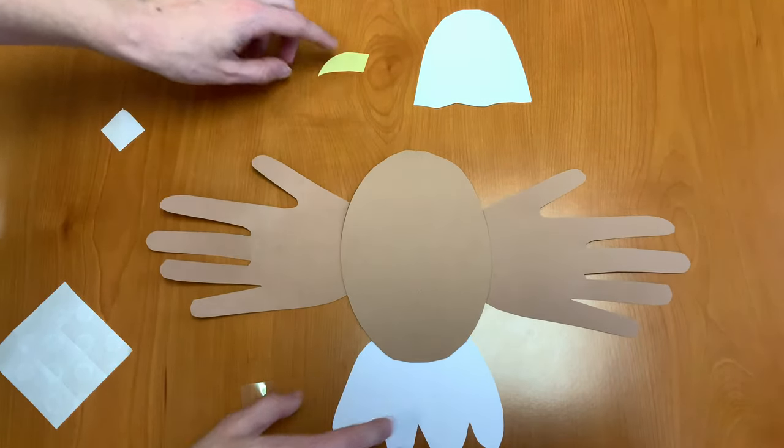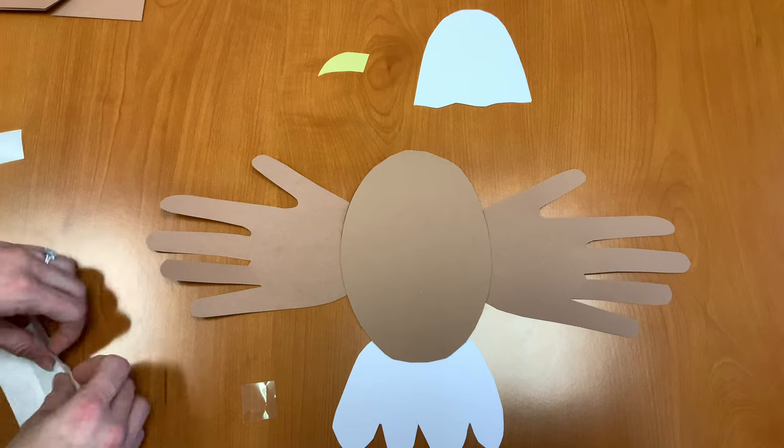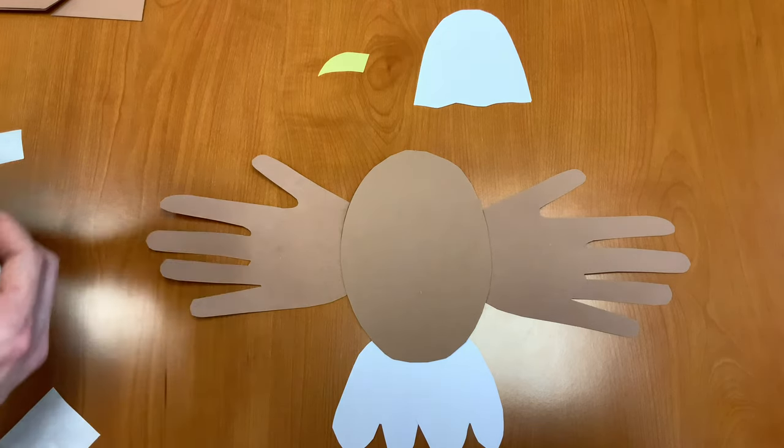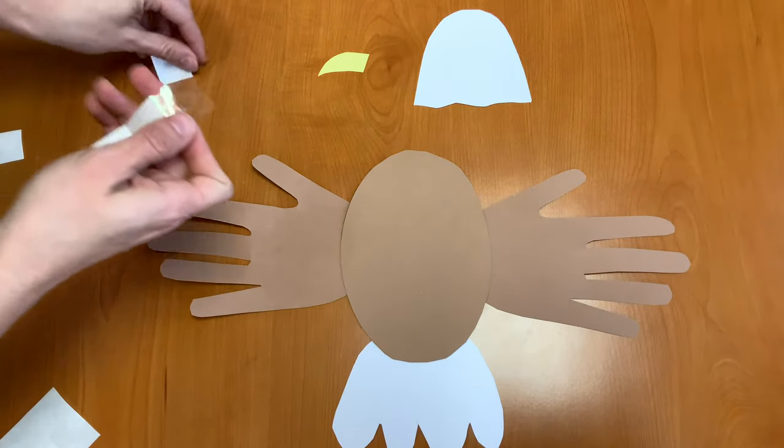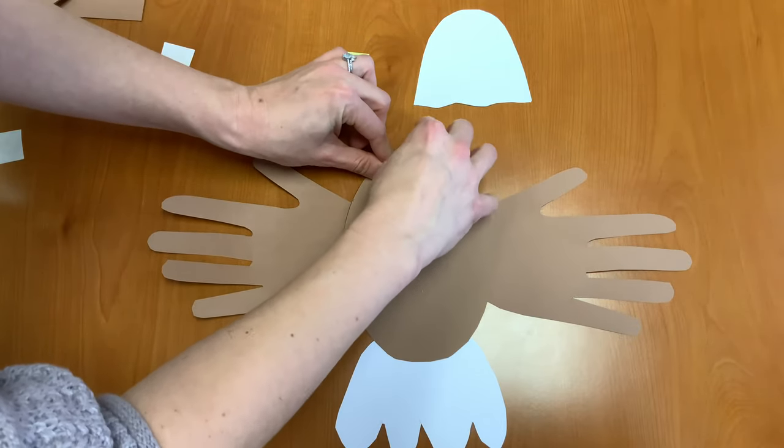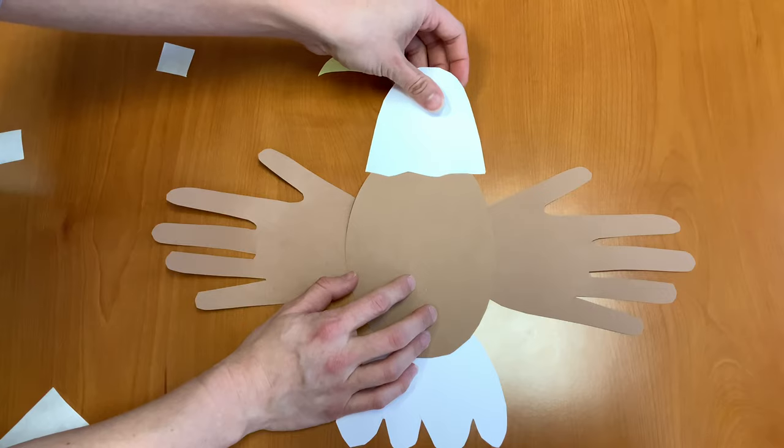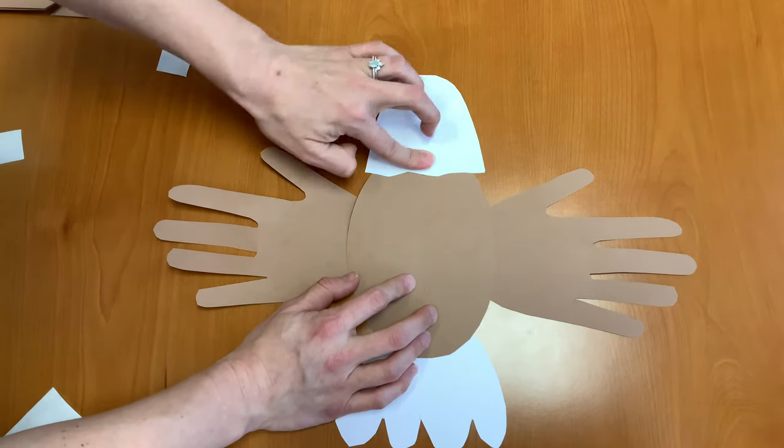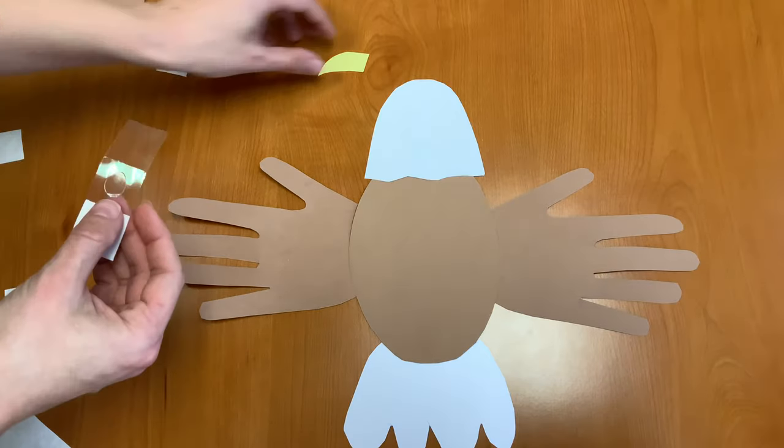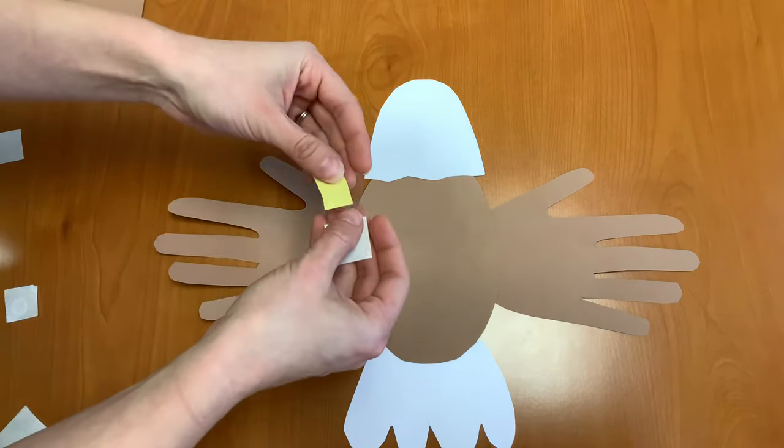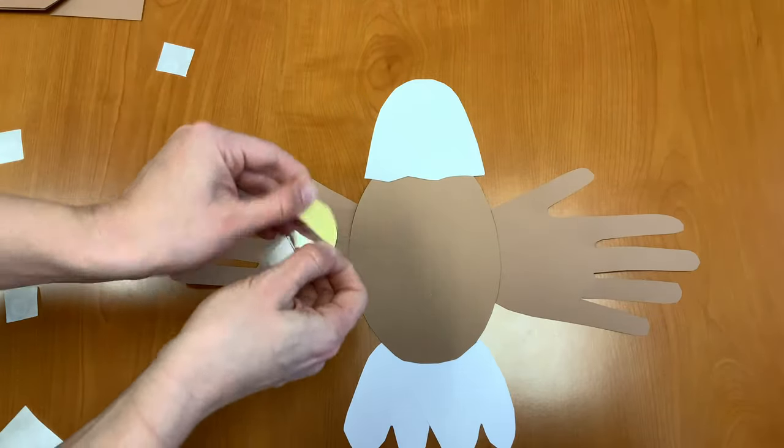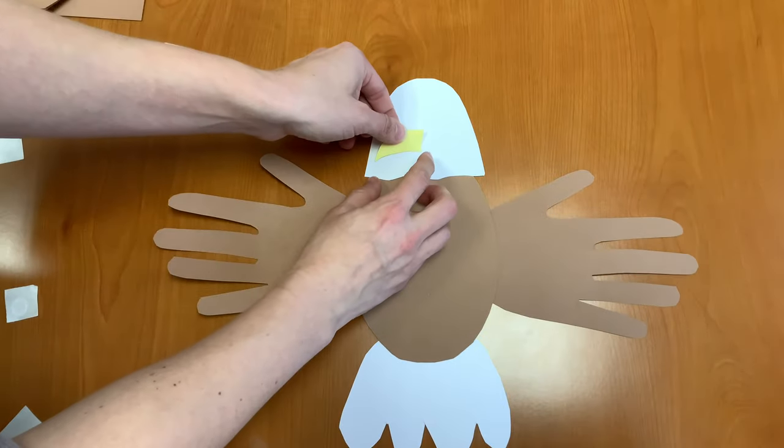But we need a head and beak now. So we're going to put a glue dot at the top of the oval. And we'll put the head right down on it. And last but not least, I'm going to put a glue dot on the back of my beak. Peel it off. And we'll put the beak on there.